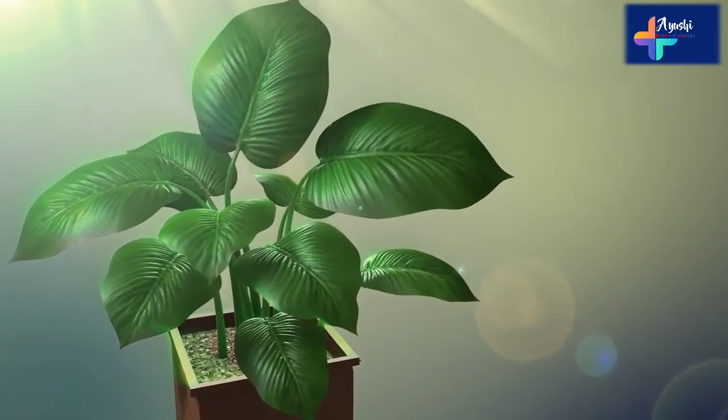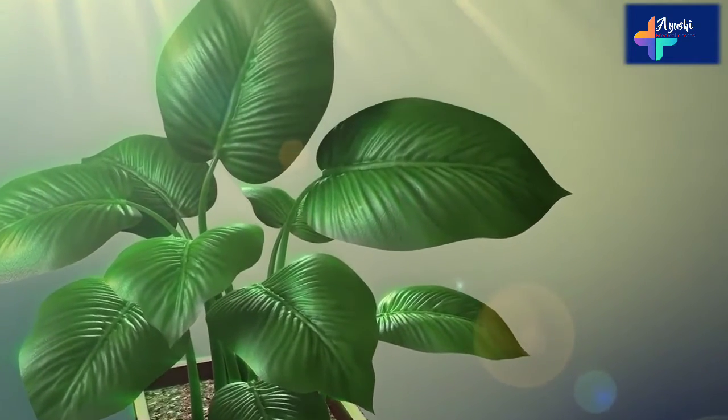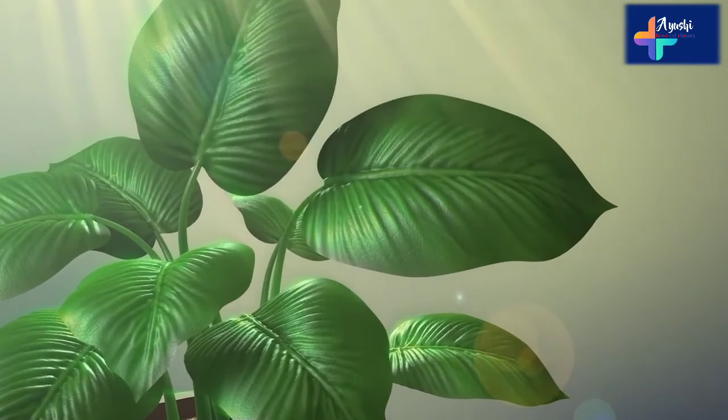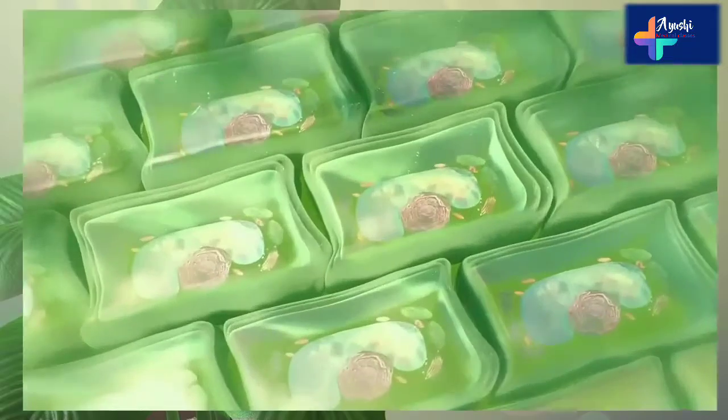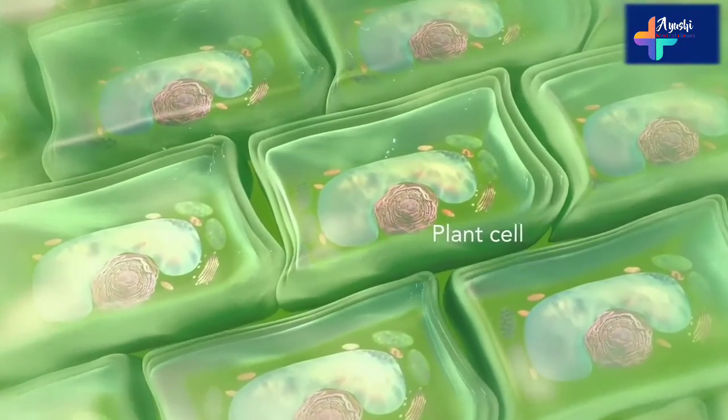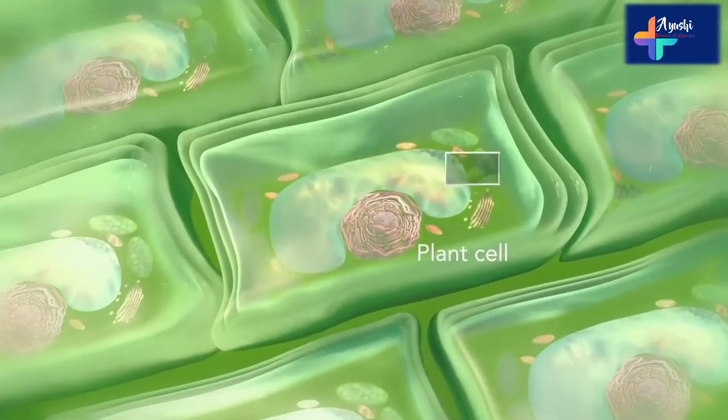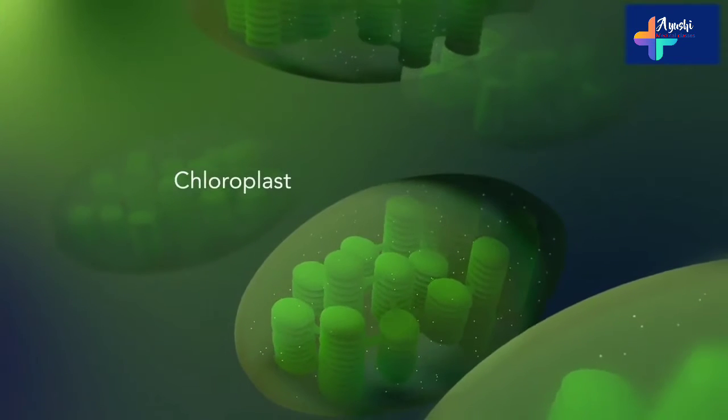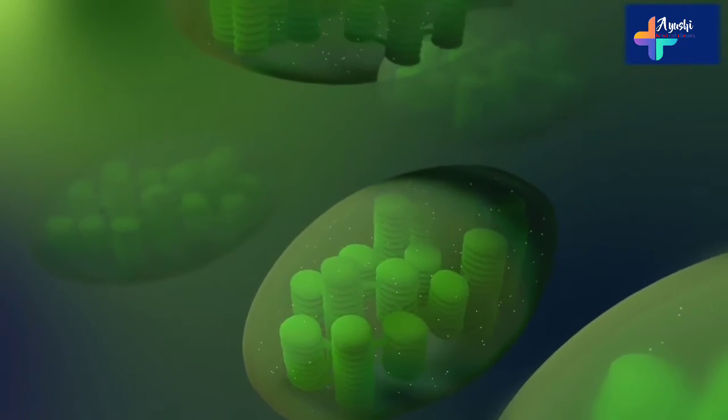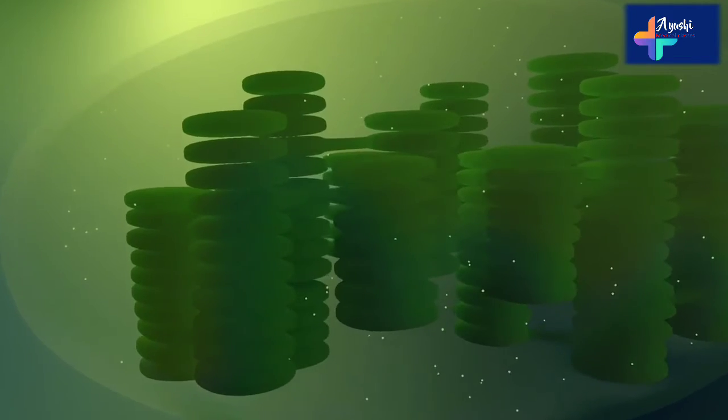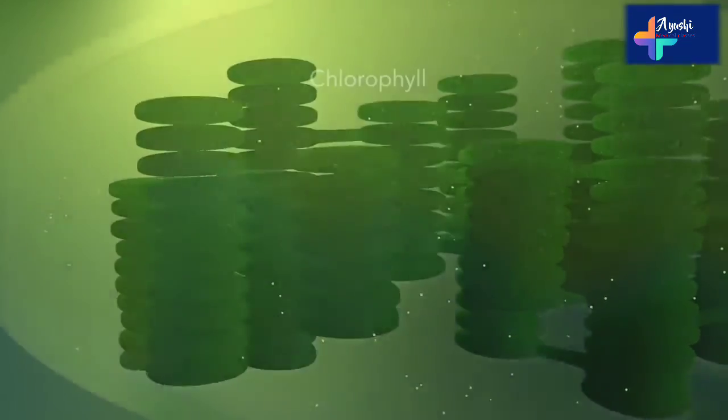Some organisms, such as plants that are photo-autotrophic, meaning they capture sunlight for energy, have cells with an organelle called a chloroplast. The chloroplast is where photosynthesis happens. It's green because it has a green pigment called chlorophyll.